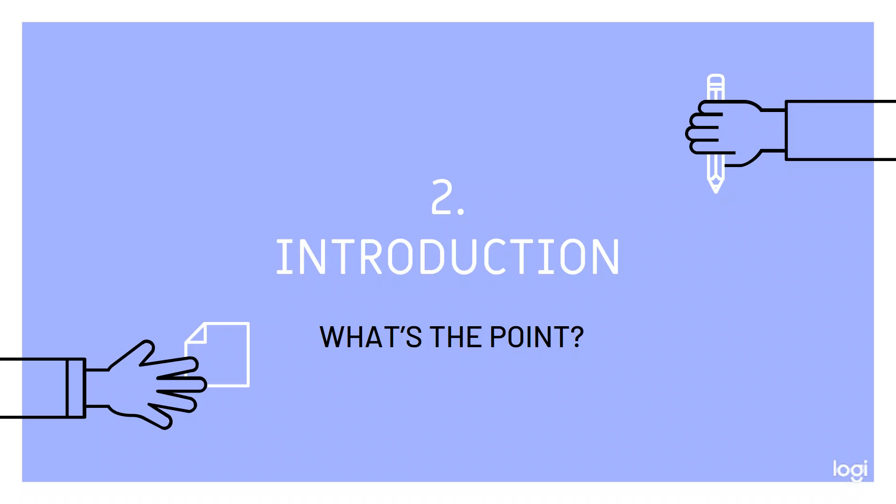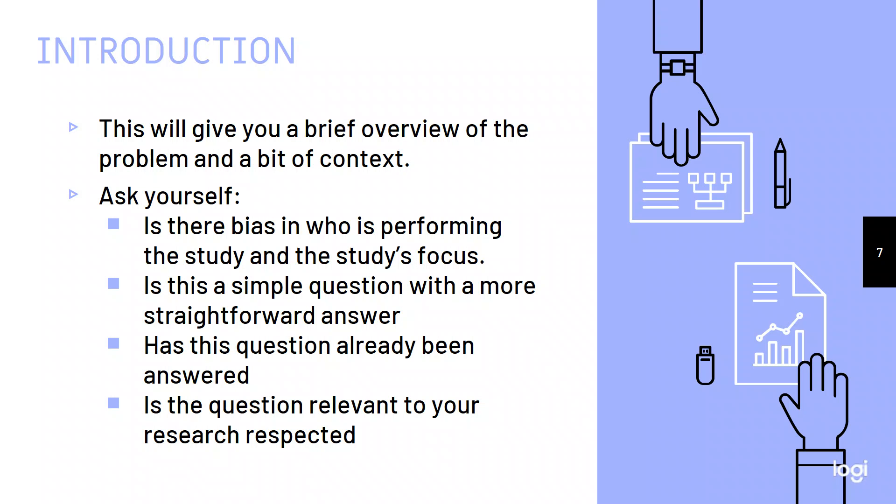Next part is the introduction, and the introduction is basically going to tell you, what's the point? Why am I reading this? So this will give you a brief overview of the problem and a bit of context. No strong study is not going to address a problem, right? If there is no problem, what are you studying? If there is no question, what are you answering in the course of the study? So when you're reading the introduction, you want to ask yourself, is there bias in who is performing the study and the study's focus? For instance, for a really long time, the only people doing any research about tobacco was the tobacco industry. Currently, the only people doing any research on gambling addictions are casinos and gambling enterprises. So you always want to ask yourself, where's the bias? Who's paying for it? And you should see that in the introduction when it presents the problem and you get an idea of who the authors are.